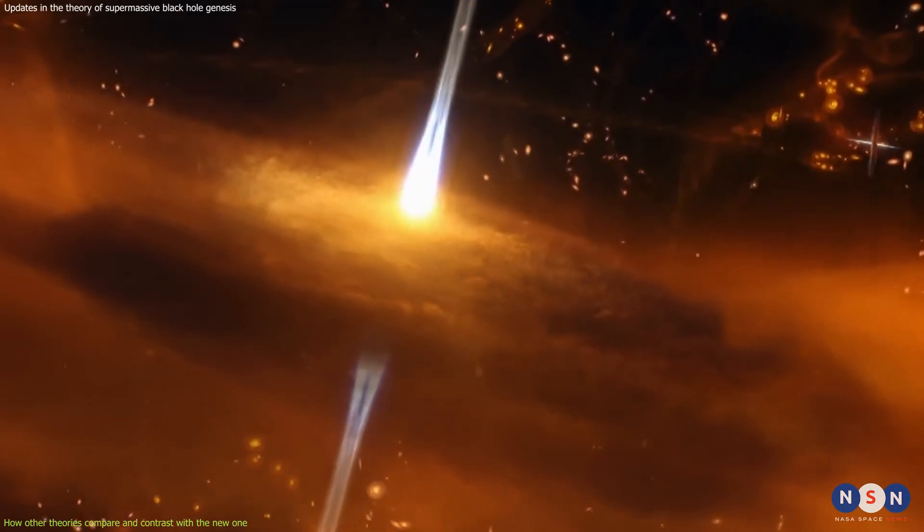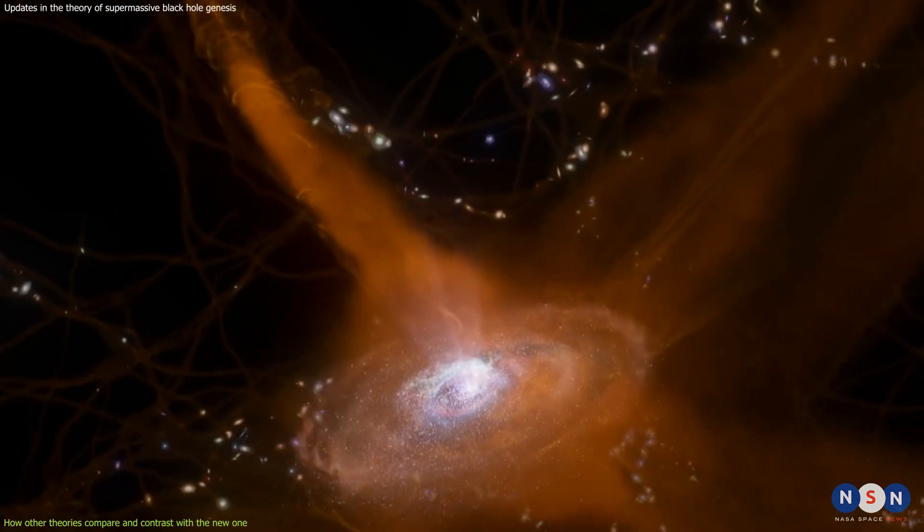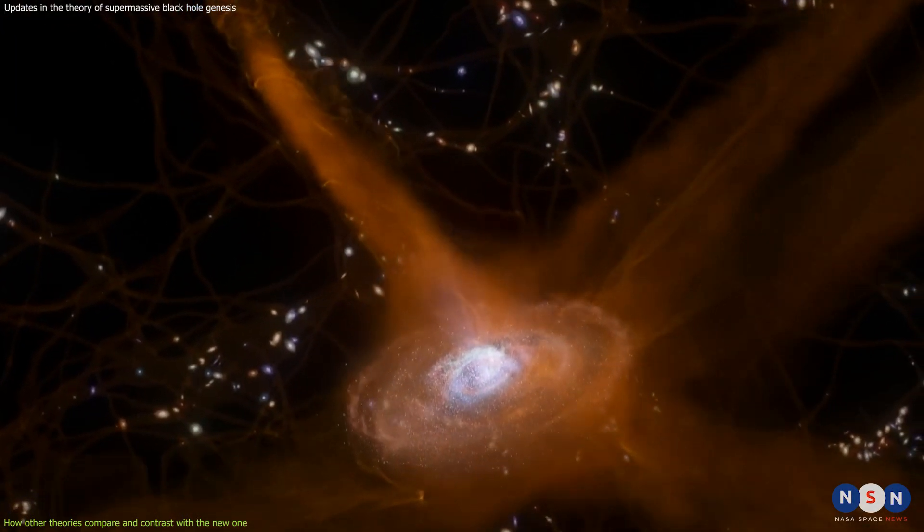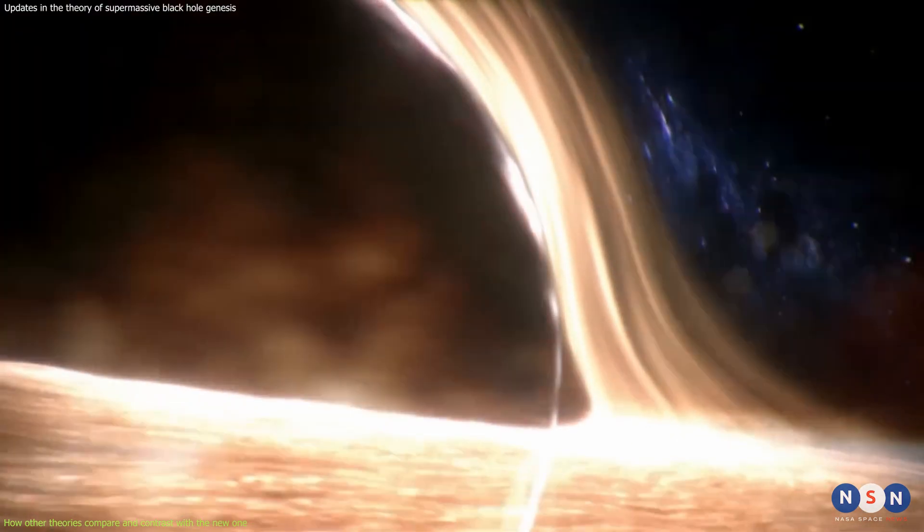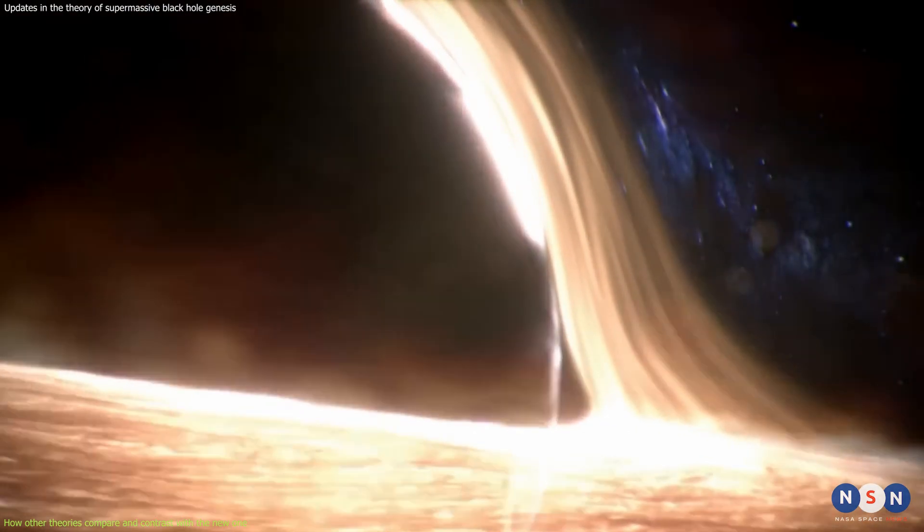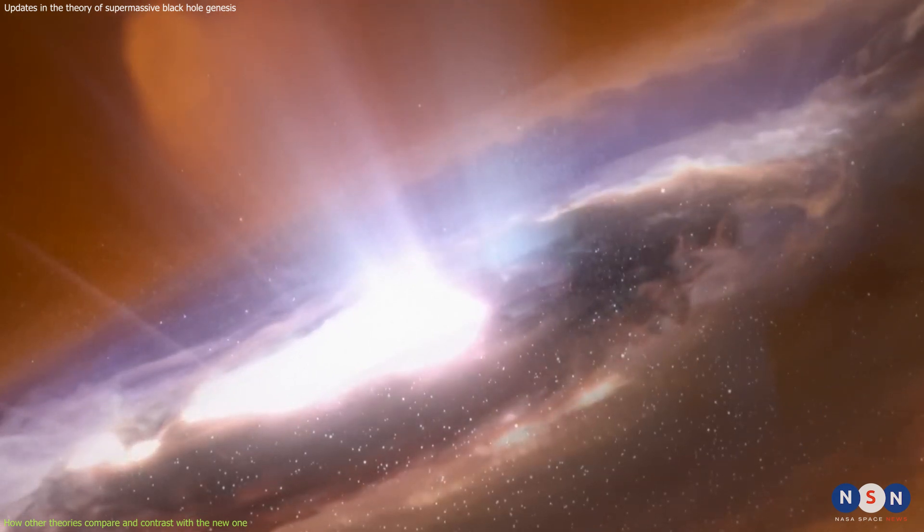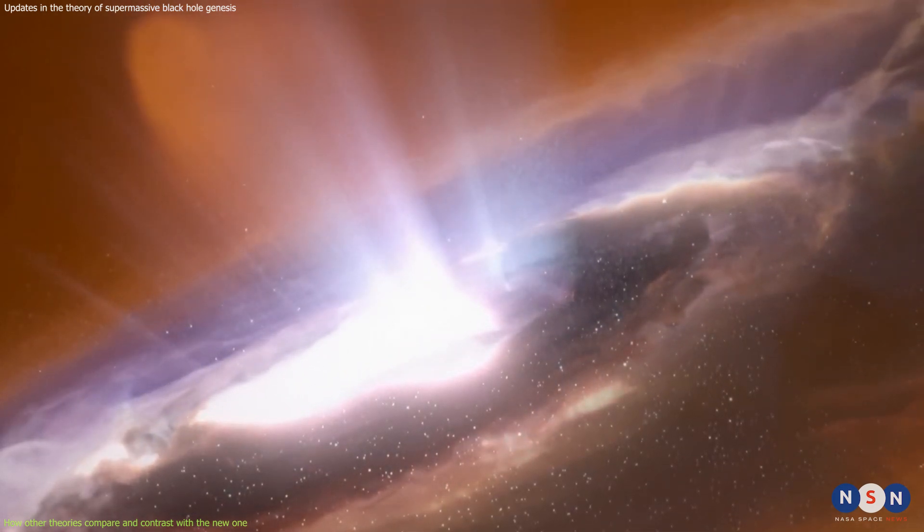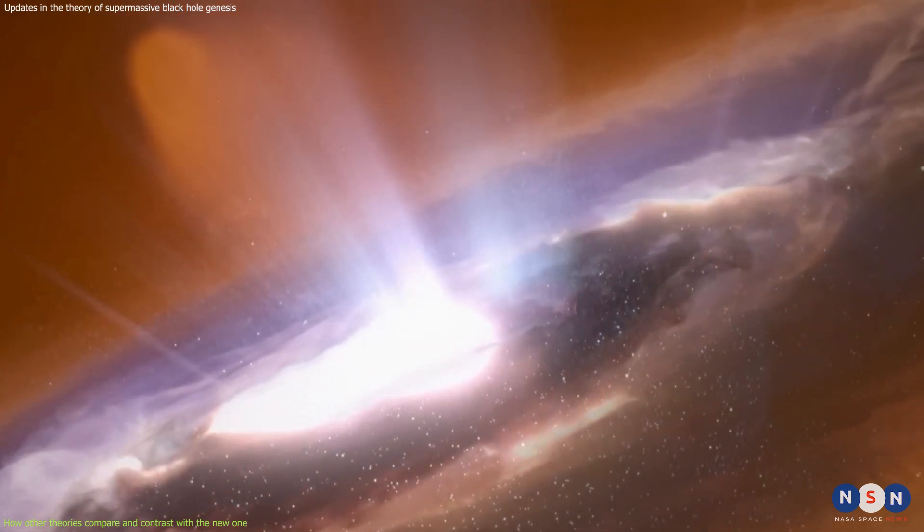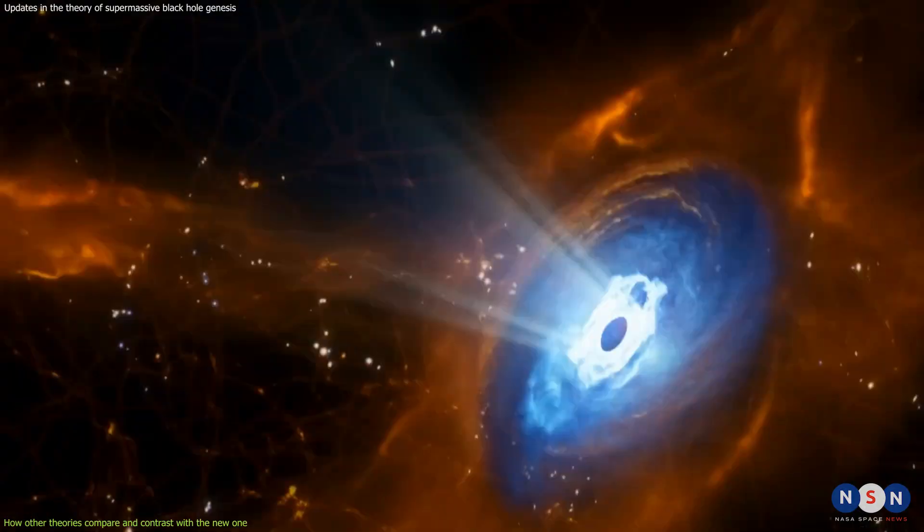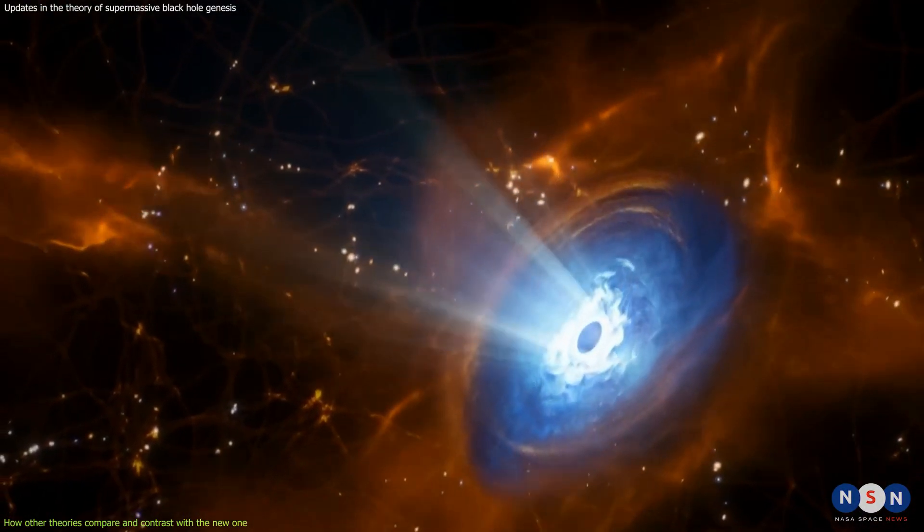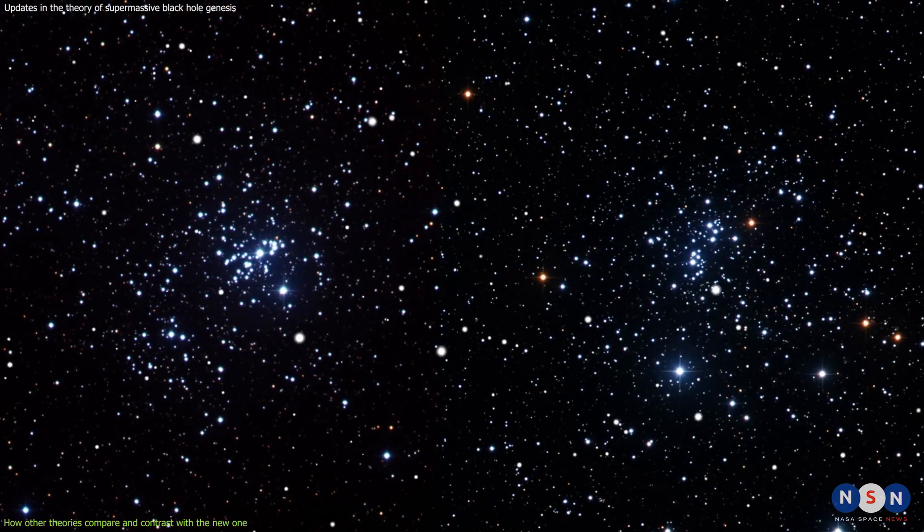This theory has some advantages, such as being consistent with our understanding of stellar evolution and being supported by observations of gravitational waves from merging black holes. However, it also has some drawbacks, such as being too slow to produce supermassive black holes in the early universe and requiring very specific conditions for the mergers to happen.